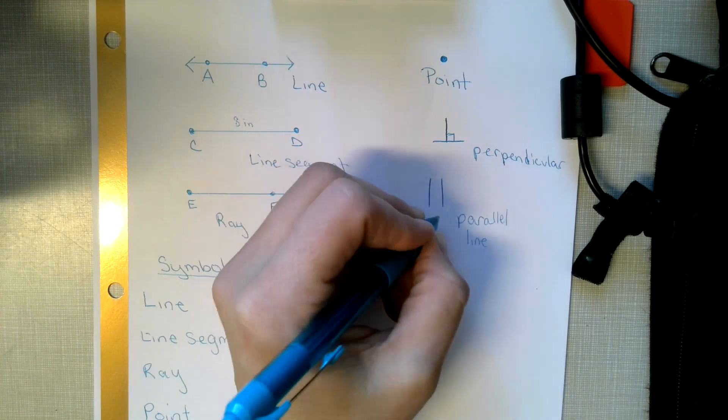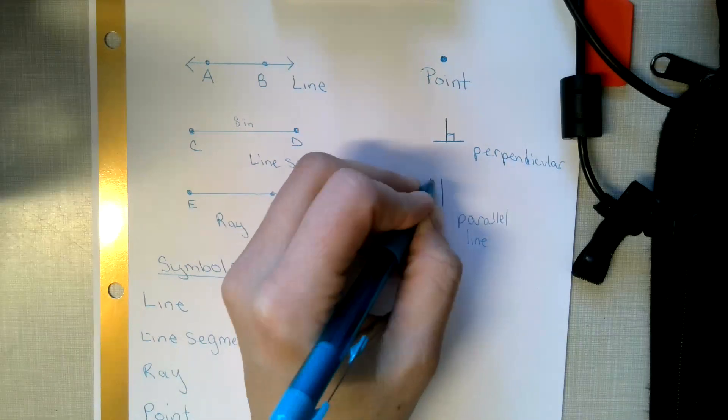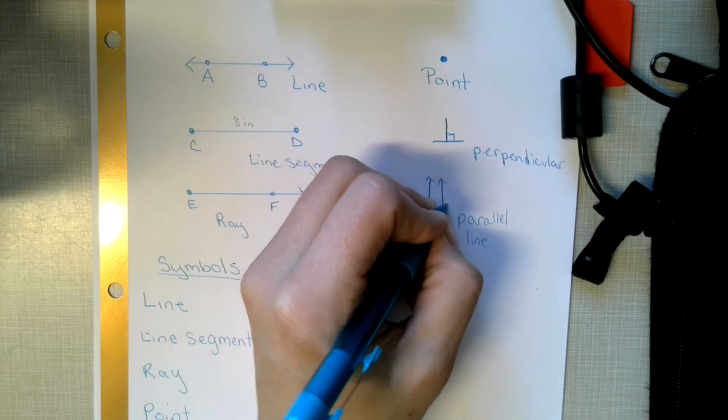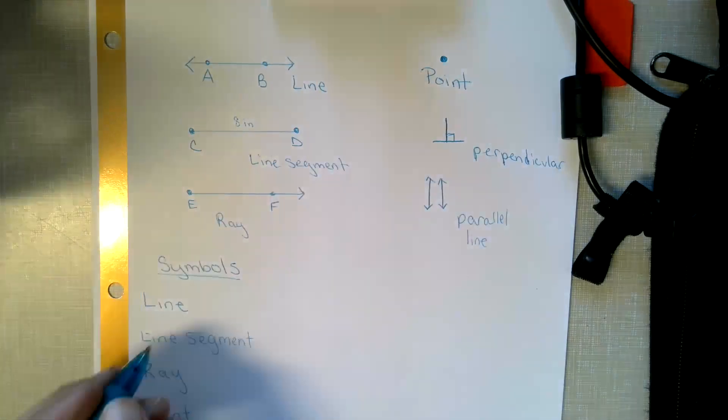What I have here is parallel line segments. If I make them parallel lines, I have to put the arrows on each end. That's parallel lines.